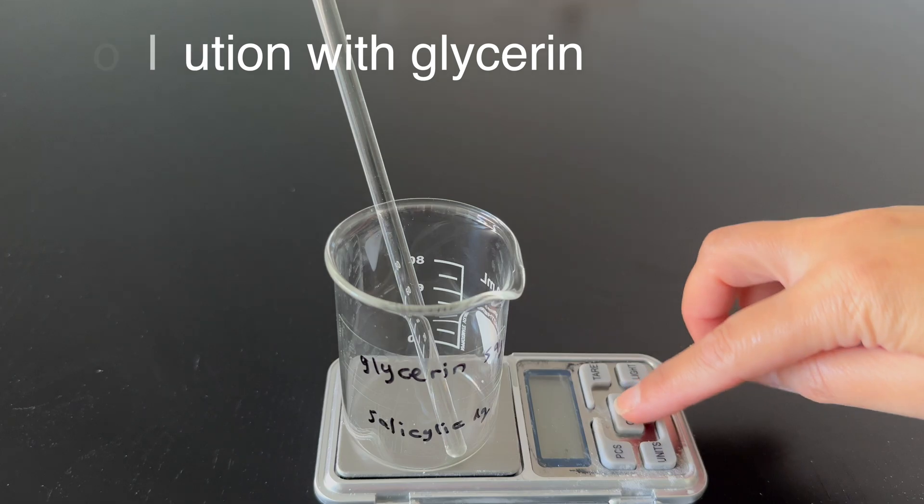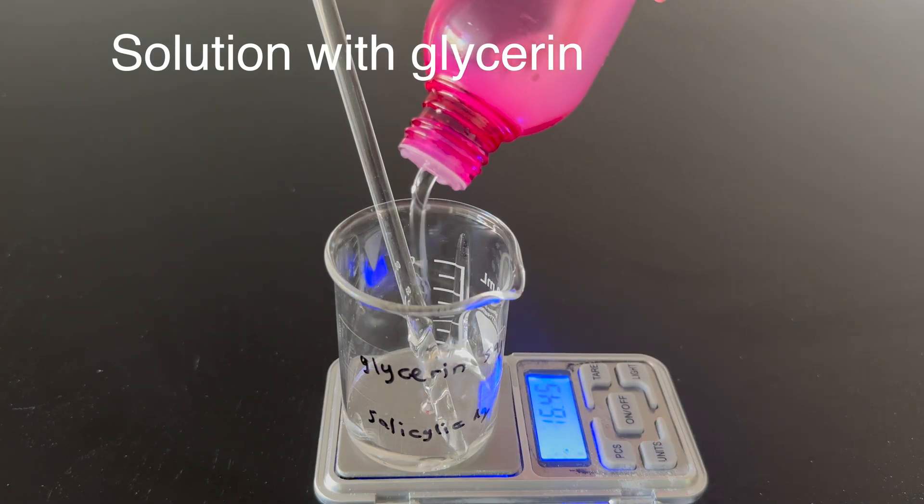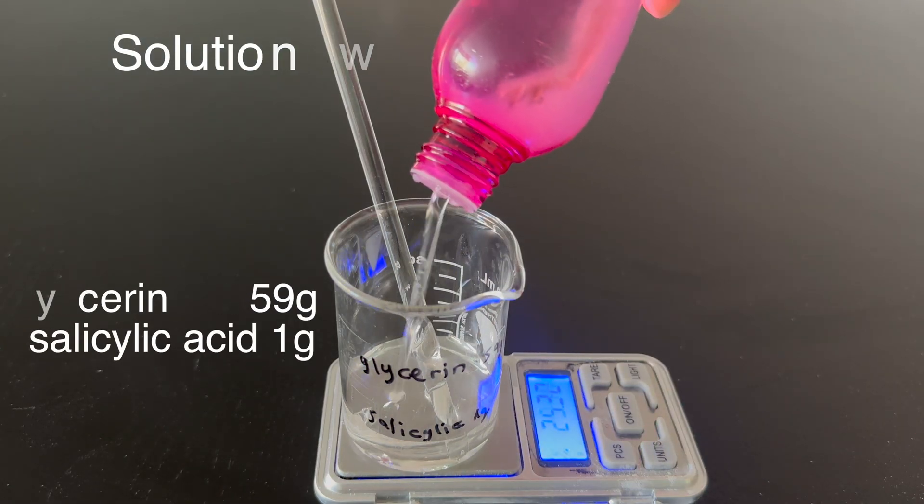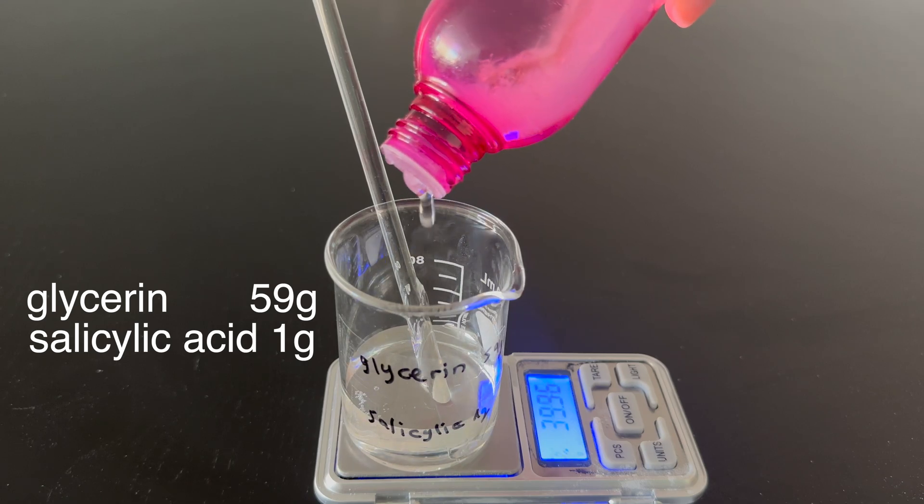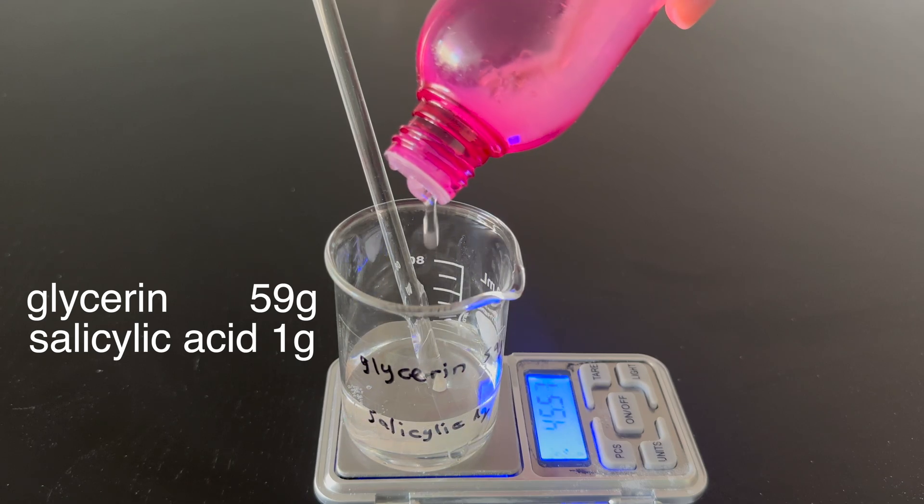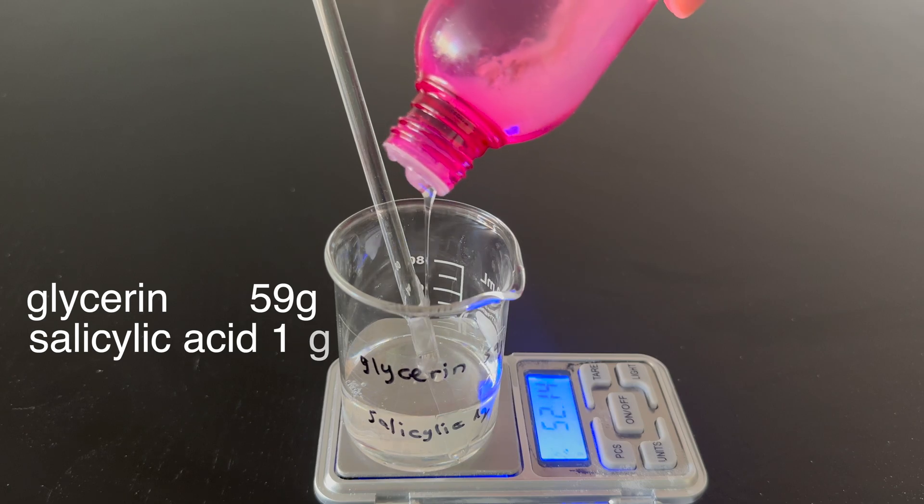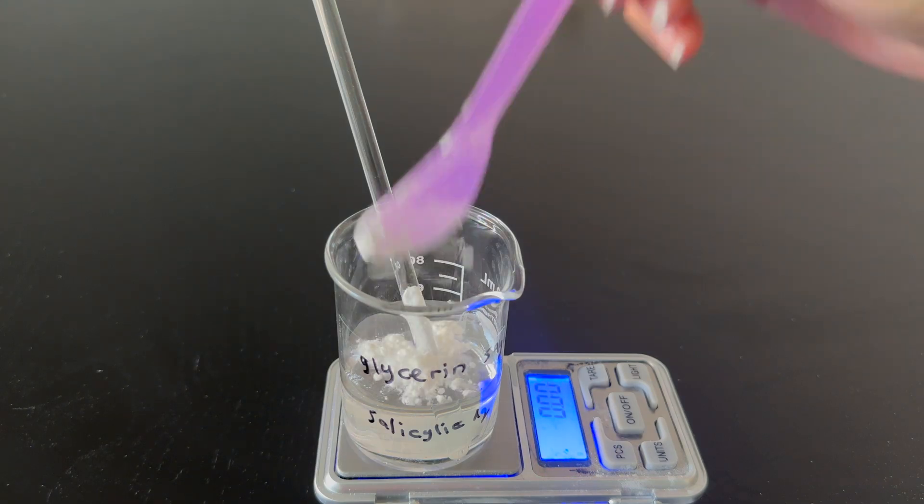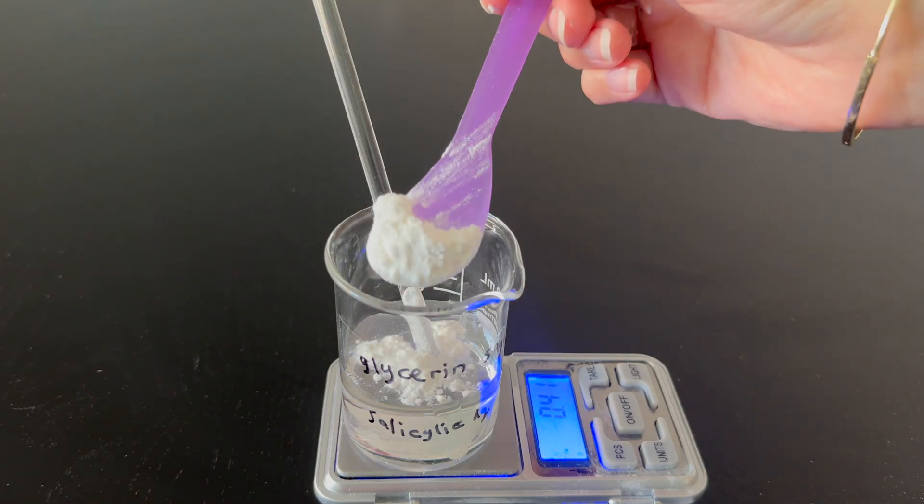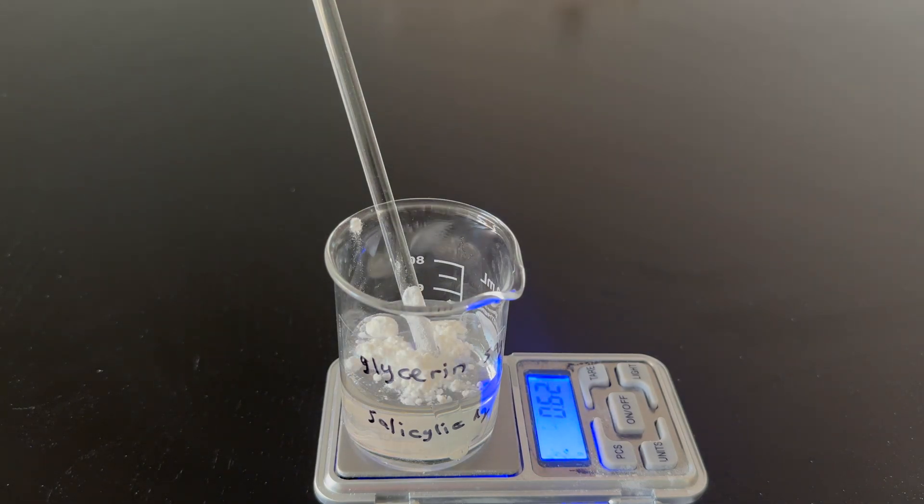The next solvent I am showing here is glycerin. The salicylic acid hardly dissolves in the glycerin. Even when I use 59 grams of glycerin to dissolve 1 gram of salicylic acid. I'm showing you the glycerin solution here so you can consider that it is a less suitable solvent for salicylic acid. I will show you later that the salicylic acid didn't dissolve in the glycerin even after a few hours.